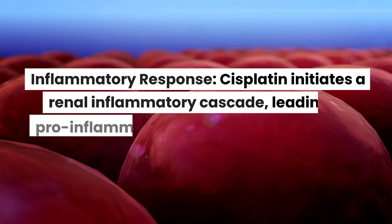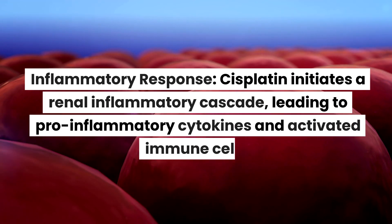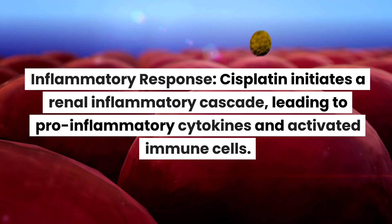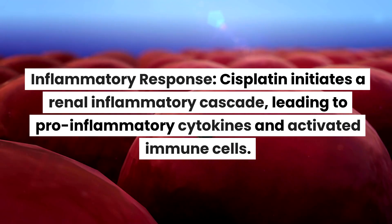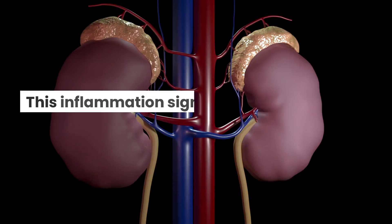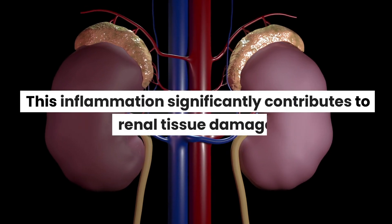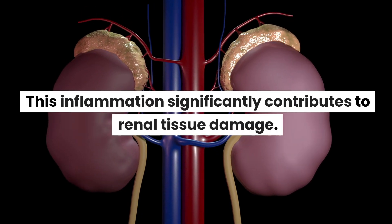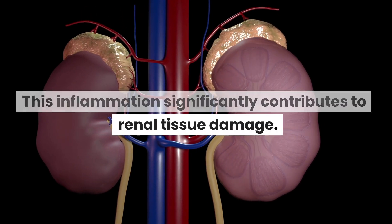Inflammatory response. Cisplatin initiates a renal inflammatory cascade, leading to pro-inflammatory cytokines and activated immune cells. This inflammation significantly contributes to renal tissue damage.